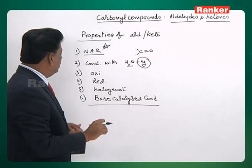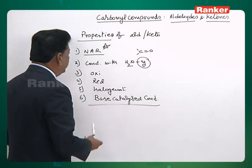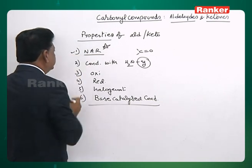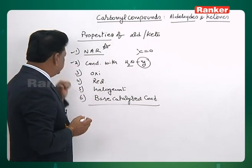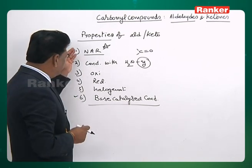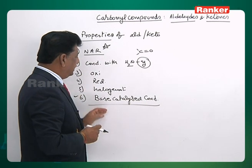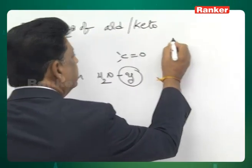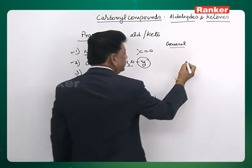Let us go one after another and see the explanation within each type of reaction. The nucleophilic addition reaction and condensation with NH2Y - even most of the base-catalysed reactions are condensation reactions, which are also a continuation of this. So more than 50 percent of the reactions of aldehydes and ketones involve nucleophilic addition reactions. Let us have a general discussion about this particular nucleophilic addition reaction.